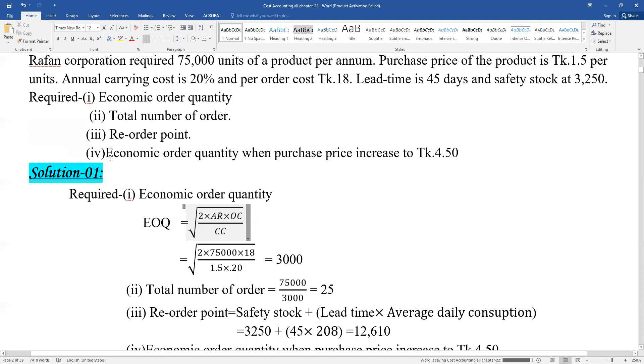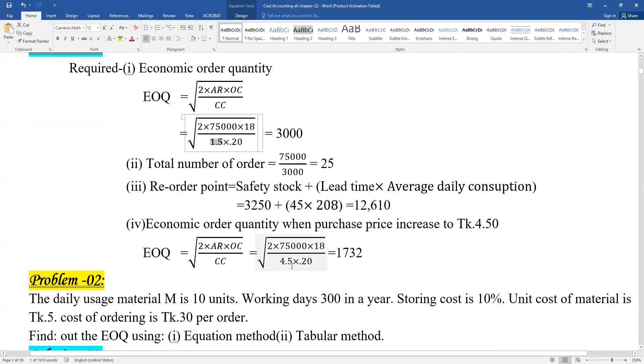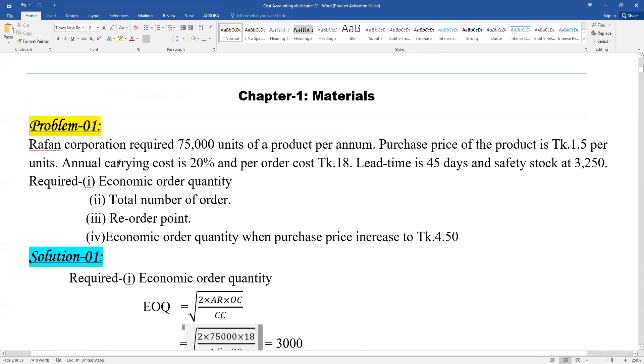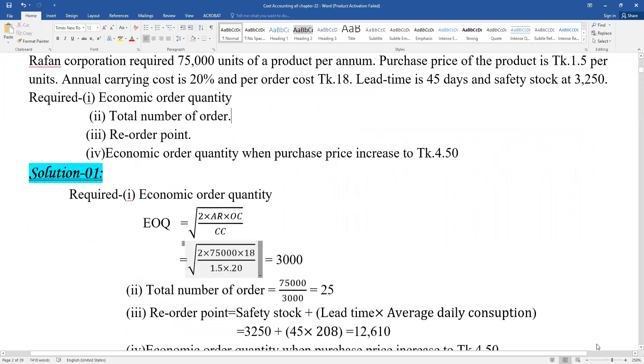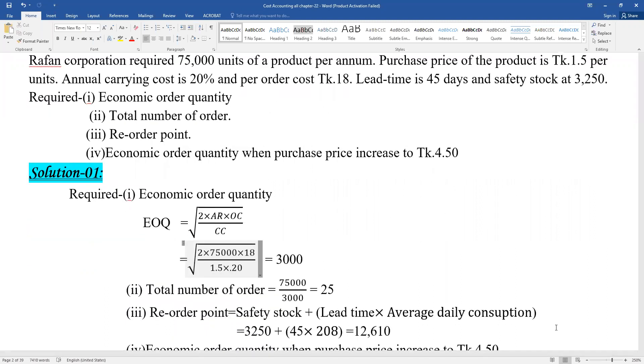Part (iv): Economic order quantity when purchase price increases to Taka 4.5. The price changes from 1.5 to 4.5. We need to calculate the new EOQ with this increased purchase price.